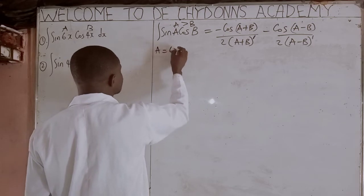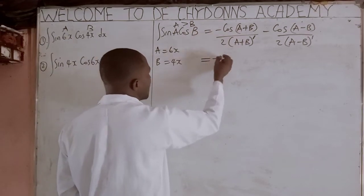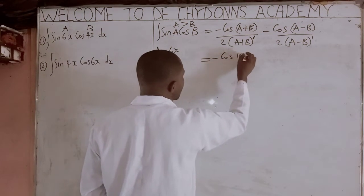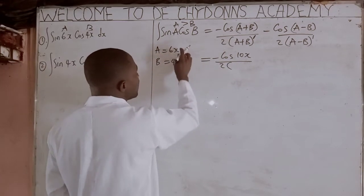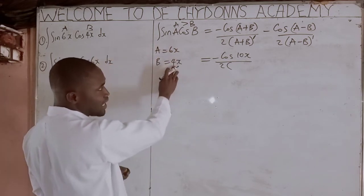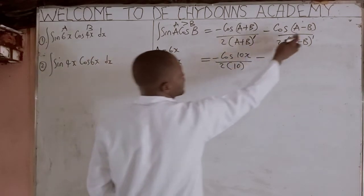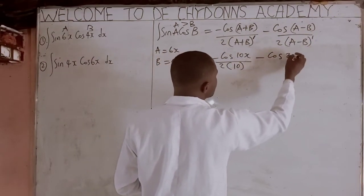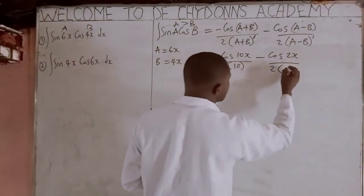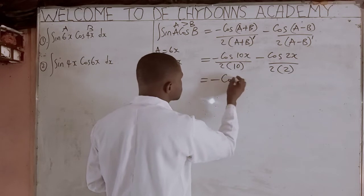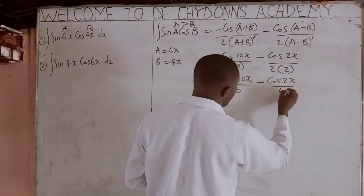Our A is 6x and our B is 4x. So we get minus cos(6x + 4x) = minus cos(10x), all over 2 brackets — when you differentiate 10x you have 10. Then minus cos(6x − 4x) = minus cos(2x), all over 2 brackets — when you differentiate 2x you have 2. So the final answer is minus cos(10x) all over 20, minus cos(2x) all over 4, plus C.